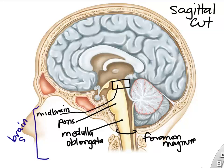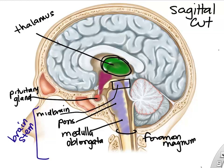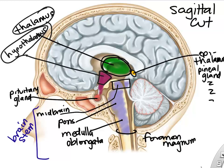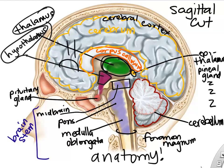On top of the brainstem, the pituitary gland is not part of the brain but is stuck onto it. Above that, the thalamus and hypothalamus — part of the hypothalamus extends down to the pituitary. There is also the epithalamus or pineal gland, the corpus callosum connecting right and left cerebrum, and the cerebral cortex as the outer part of the cerebrum. The cerebellum is at the back near the pons.